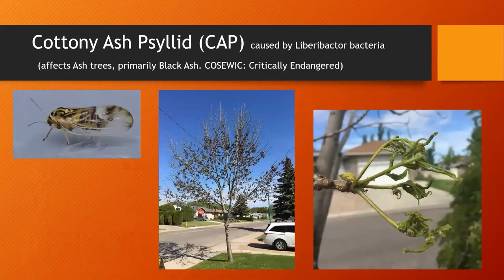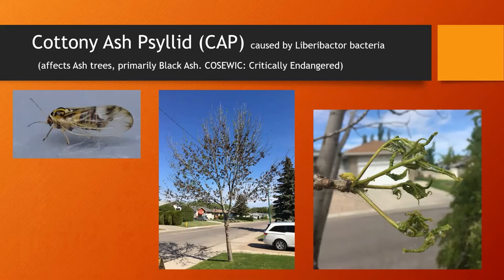We also have cottony ash psyllid in the city. You might have heard about this in the last few years. It attacks specifically black ash trees, kills them, and is caused by a bacteria. It causes these curling, webbing of the leaves of ash trees. You'll also see this on green ash trees — something you can again take pictures of and upload so we can assess the extent of cottony ash psyllid damage to trees.